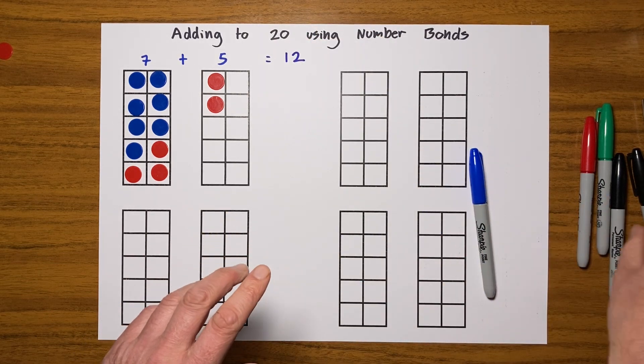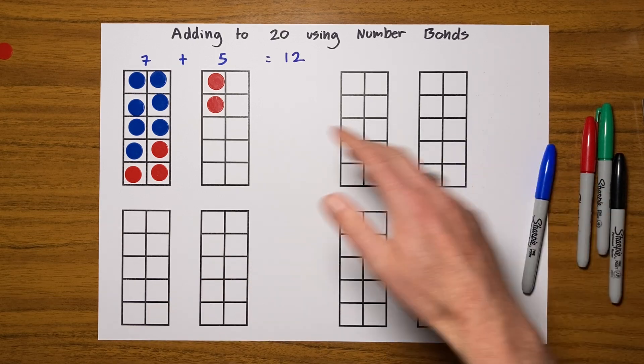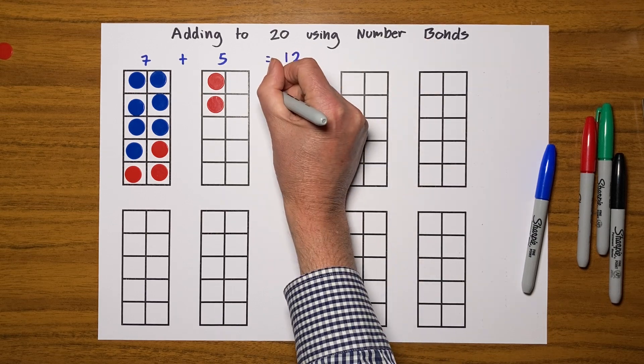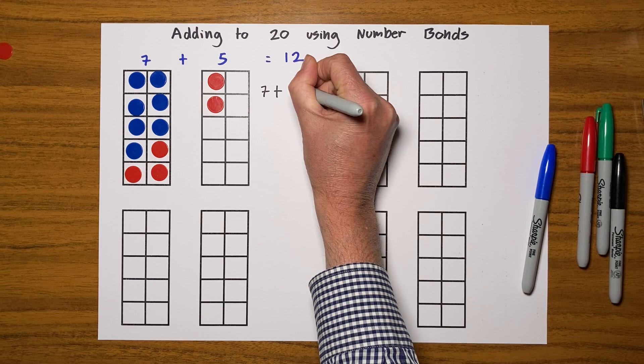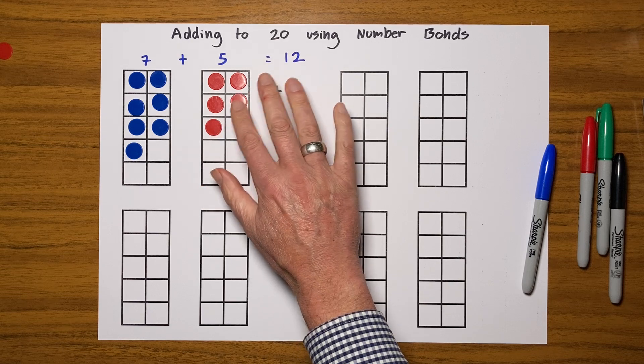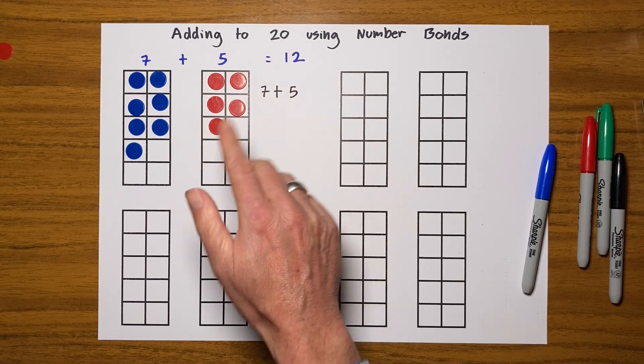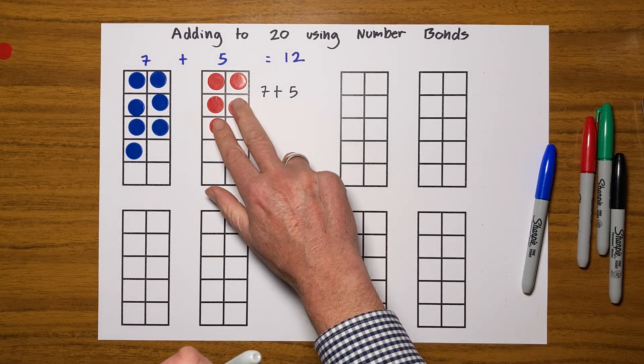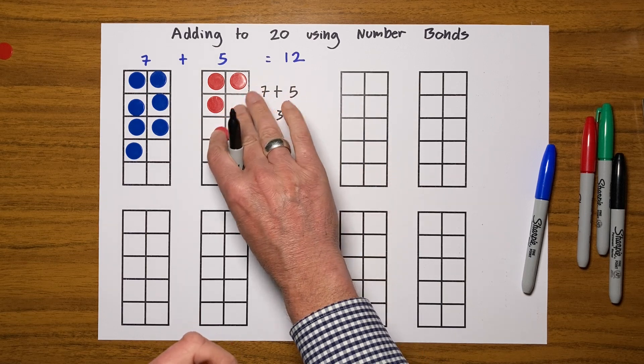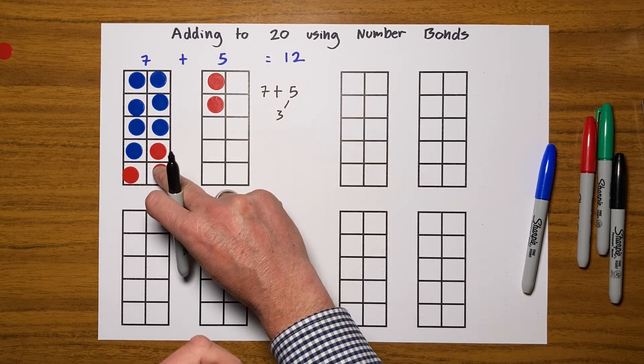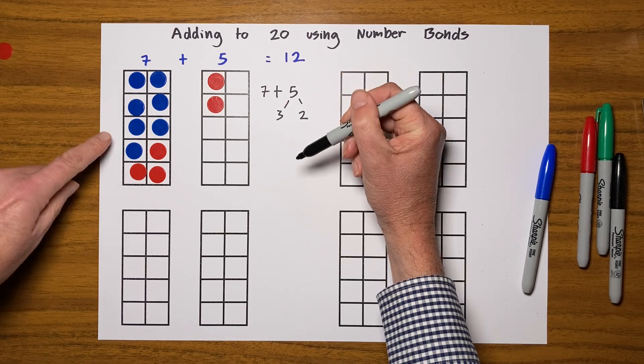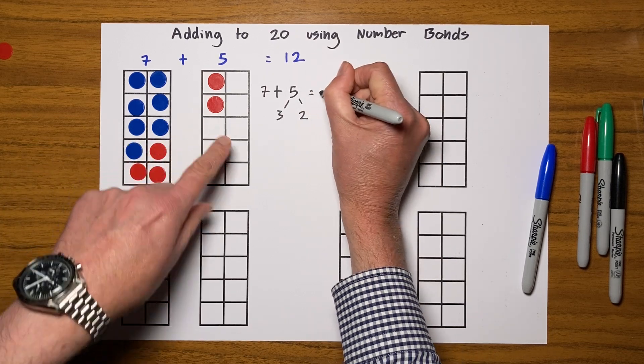And I'm going to show you how I would write that down, because once we get really good at this we won't need to use these sets. So what I've done is I've got my 7 add 5—let's write it down here: 7 add 5. But what I've done is I've thought to myself, how many do I need from that 7 to get to the next 10? And I know it's 3. So I take 3 from that 5, and over they go. And then there are 2 left over. 7 and 3 is 10, add the 2 is 12.